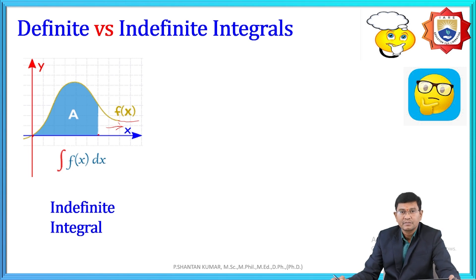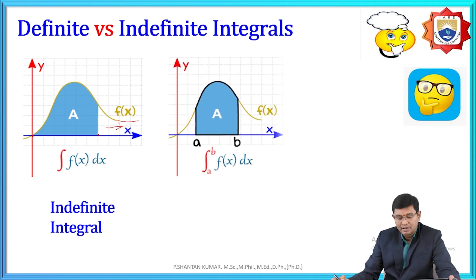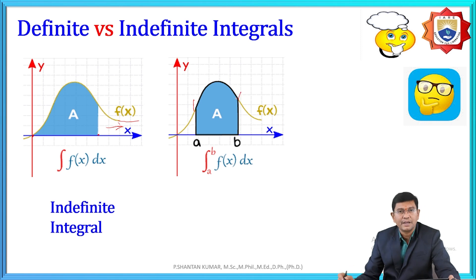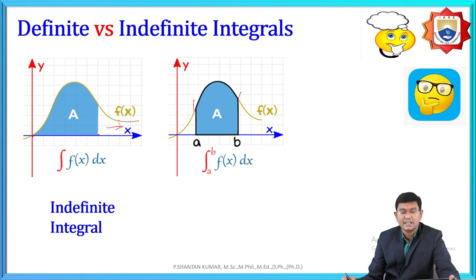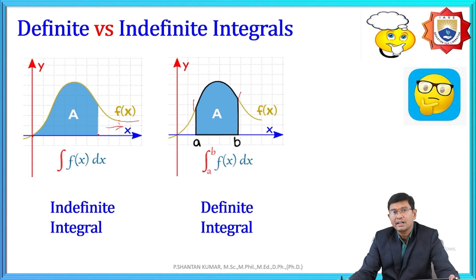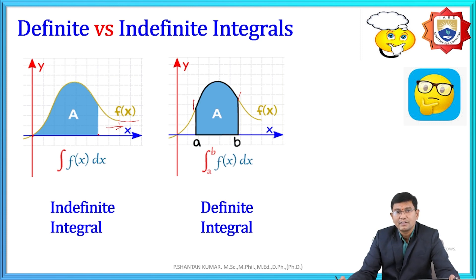In another graph, we can clearly see that the lower limit is 'a' and the upper limit is 'b' — both are finite and mentioned on the curve. That is the meaning of a definite integral. In conclusion: whenever the limits are given as finite numbers for both lower and upper limits, it is a definite integral; otherwise it is an indefinite integral.